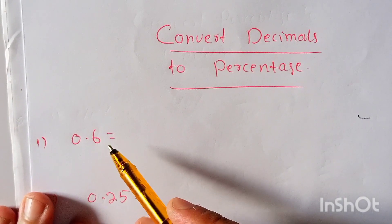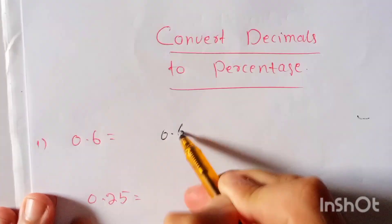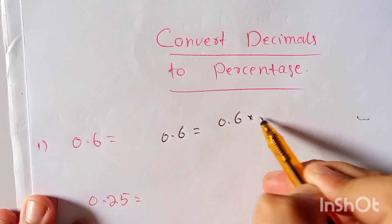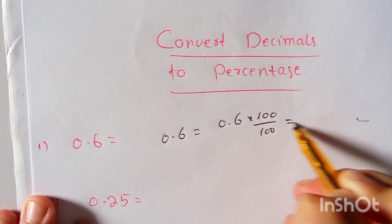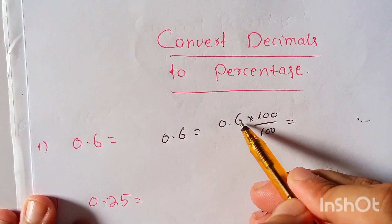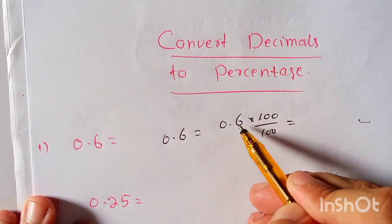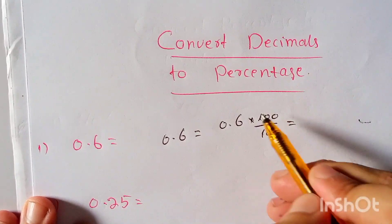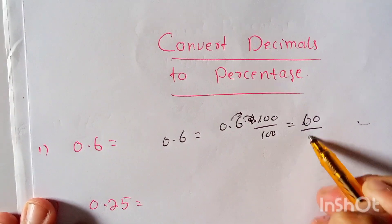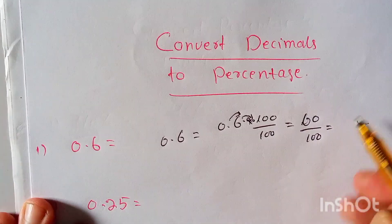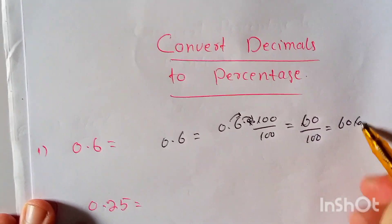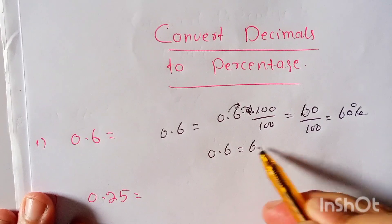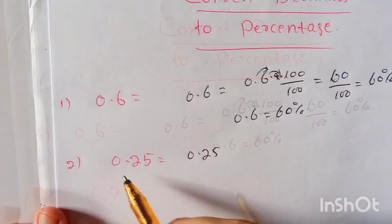For example, what is 0.6 in percentage? So 0.6 is equal to 0.6 multiplied by 100 and divided by 100. To multiply 0.6 by 100, we will carry the decimal point two places from left to right. So it is equal to 60/100, or we can write it as 60 percent. So 0.6 is equal to 60 percent.